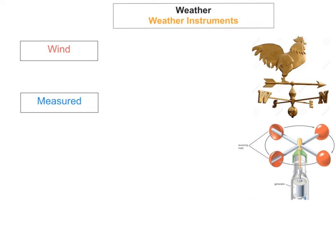We're now going to look at the next two weather instruments: how wind speed is measured and how wind direction is measured. The instrument used to measure wind direction is called a wind vane, and the instrument used to measure wind speed is called an anemometer.